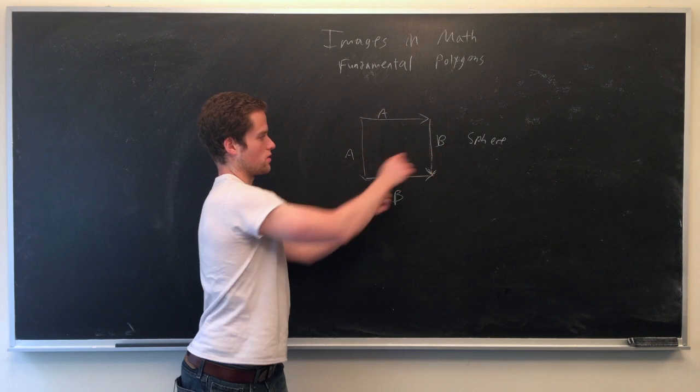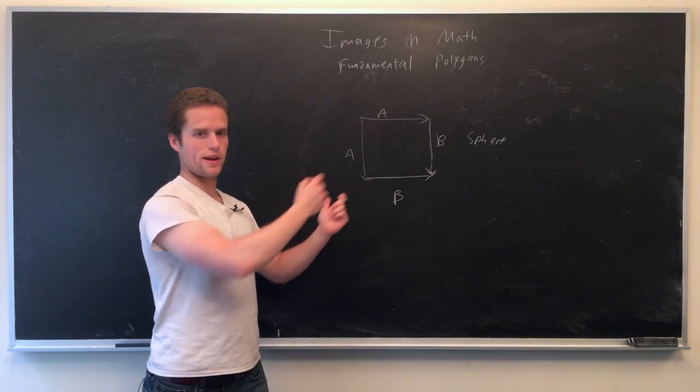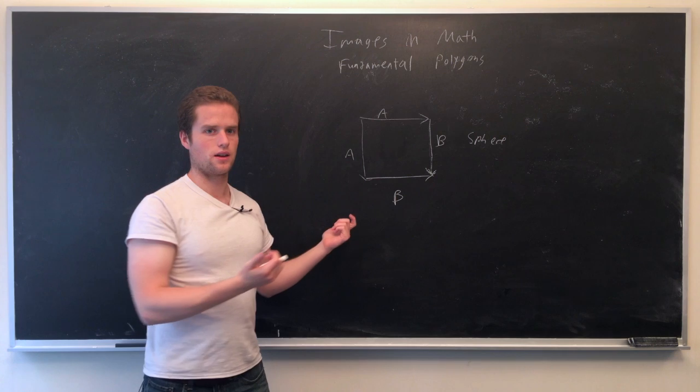So these two ends go together, these two ends go together, and here what we'll have is something topologically that looks like a sphere.